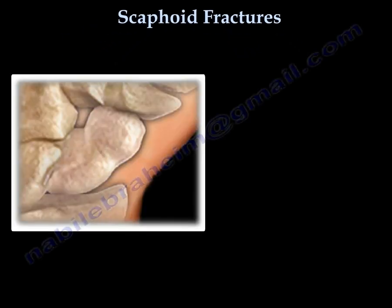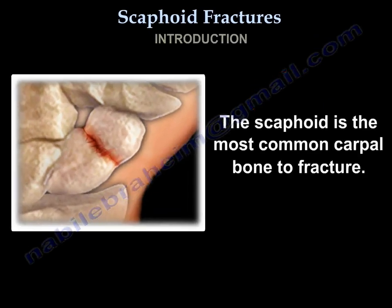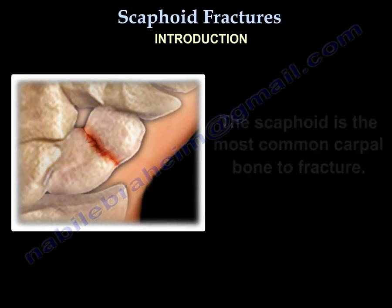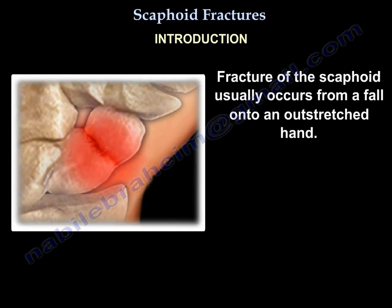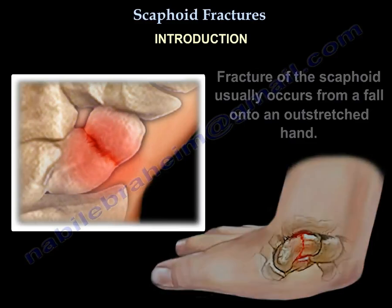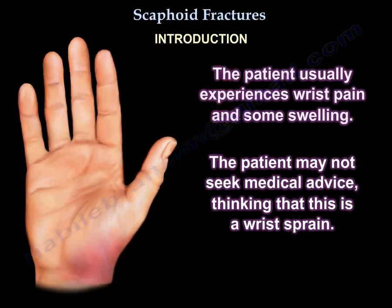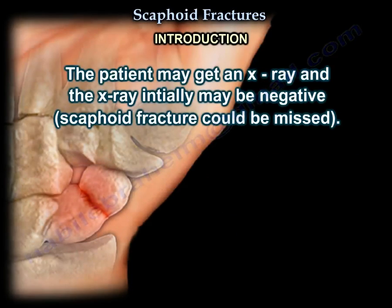Scaphoid Fractures. The scaphoid is the most common carpal bone to fracture. Fracture of the scaphoid usually occurs from a fall onto the outstretched hand. The patient usually experiences wrist pain and some swelling, and may not seek medical advice thinking it is a wrist sprain. The patient may get an x-ray and the x-ray initially may be negative.